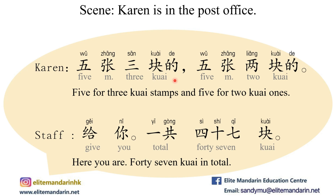普通邮票。 要多少？ Ordinary stamp. How many do you want? 五张三块的，五张两块的。 Five for three kuai stamps, and five for two kuai ones. 给你一共四十七块。 Here you are, forty-seven kuai in total.